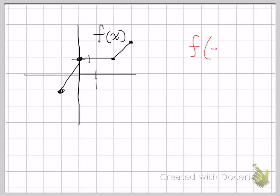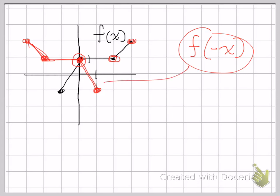This will be a reflection through the y-axis. I'm going to take each point and flip it through the y-axis. This point is one unit to the left, so I'll flip it one unit to the right. This point is on the y-axis, so I won't do anything with that. This point is two units to the right, so I'll flip it two units to the left. This point is three units to the right, so three units to the left. Connect the points, and there we have a nice mirror image — that is f of negative x.